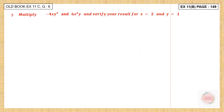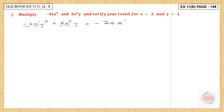Question 6. Multiply this monomial and this monomial, then verify your result for x equal to 2 and y equal to 1. First we multiply these two: minus 4xy cubed into 6x squared y. We multiply the numerical coefficients — minus 4 into 6, the sign is minus, 4 sixes are 24. For the literals: x to the power of 1 and x to the power of 2 gives x to the power of 3; y to the power of 3 and y to the power of 1 gives y to the power of 4. So after multiplication we have minus 24x cubed y to the power of 4.